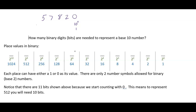In base 10, we have 10 symbols: 0, 1, 2, 3, 4, 5, 6, 7, 8, and 9. You have to count the zero, so there are 10 symbols total. In base 2, there are only two symbols — binary uses either a zero or a one.